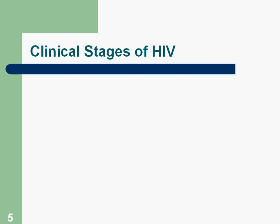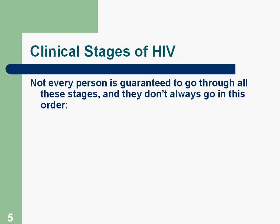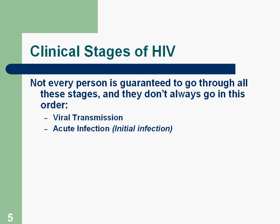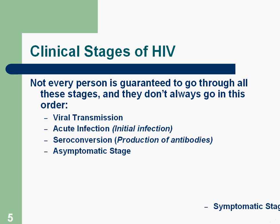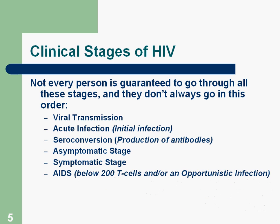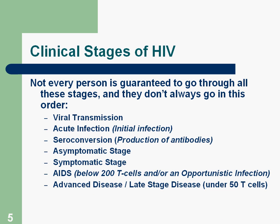Here is an overview of the clinical stages of HIV. Not every person is going to go through all these stages, and they don't always go in exactly this order. The stages are: viral transmission, acute or initial infection, seroconversion, asymptomatic stage, symptomatic stage, the stage known as AIDS, and advanced disease or late stage disease.